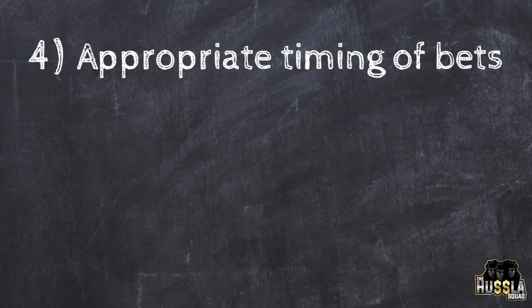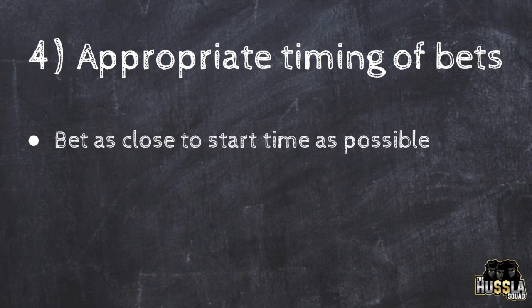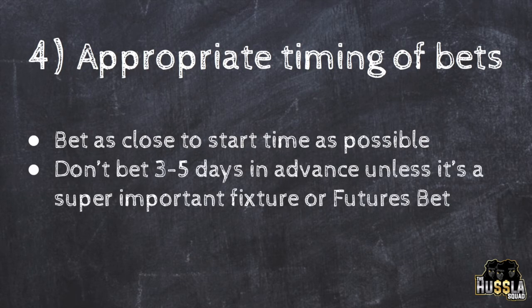Rule four is your timing of bets — probably one of the most important simple defense course rules. You don't want to bet on an event starting in four or five days time. Bet as close to the start time as possible. When you're starting out, give yourself an hour or two to get both sides on. Once you're more efficient, you can do horse racing or sporting bets with five or ten minutes left without any stress. The only exception is futures bets — like the Champions League final or the AFL grand final — because they're popular markets with a lot of money and big bettors.